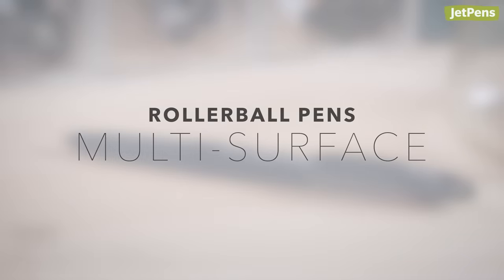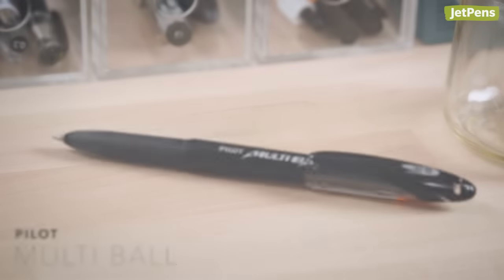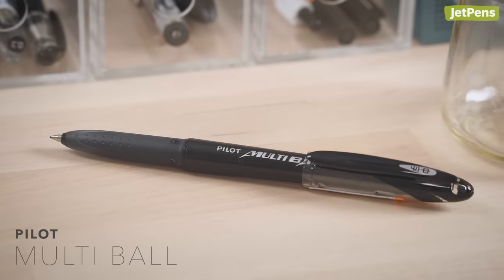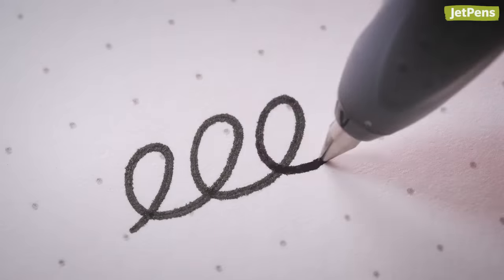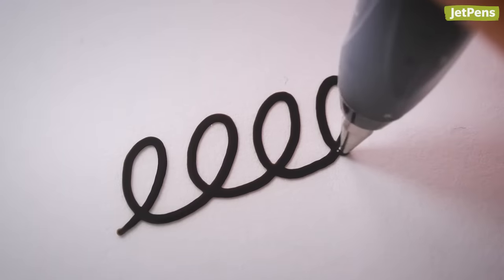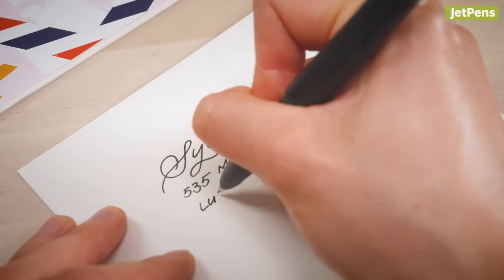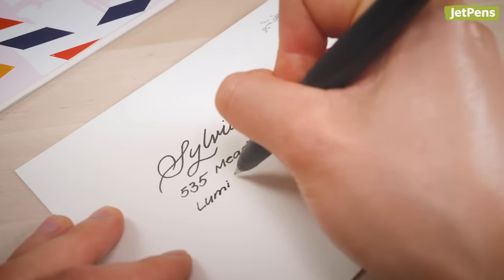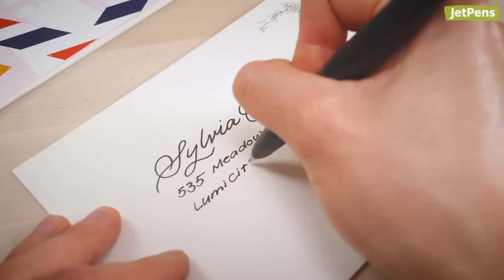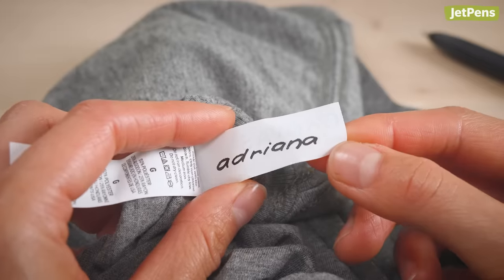Multi Surface. The Pilot Multi Ball might not look like much, but it's actually filled with a special ink that can write on porous and non-porous surfaces. Its quick-drying ink resists smearing on paper, too. You can use the same pen to label envelopes, glass containers, and close with ease.